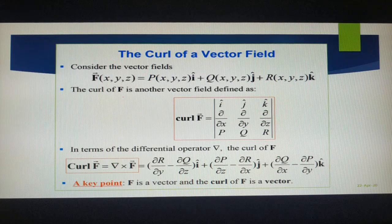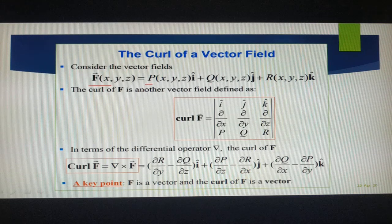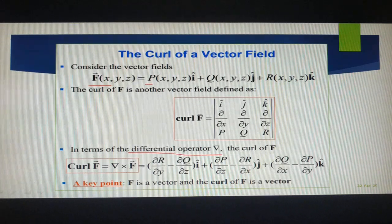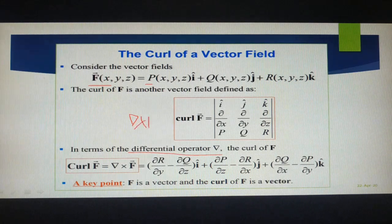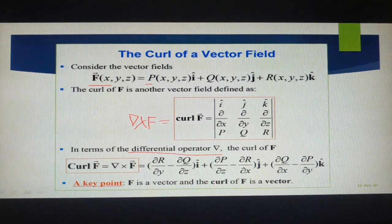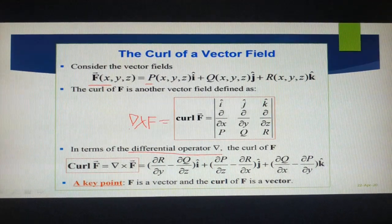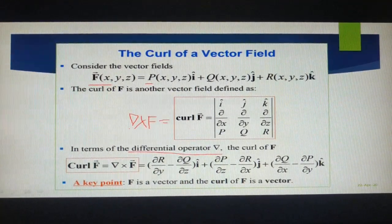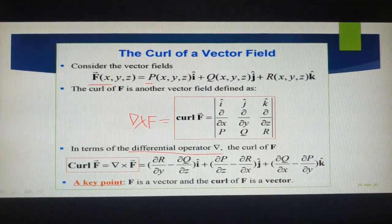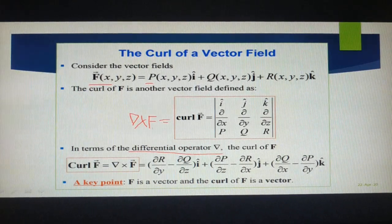Mathematically, for a 3D vector field F = Pi + Qj + Rk, curl F is written as del cross F bar. Better to write it in matrix (determinant) form: first row — unit vectors i, j, k; second row — partial derivatives ∂/∂x, ∂/∂y, ∂/∂z; third row — components P, Q, R of your vector.